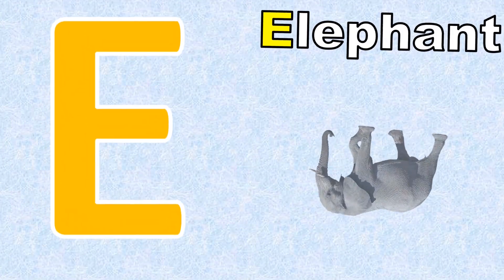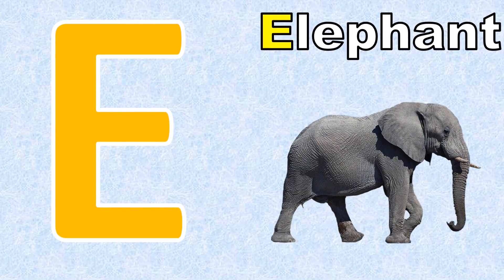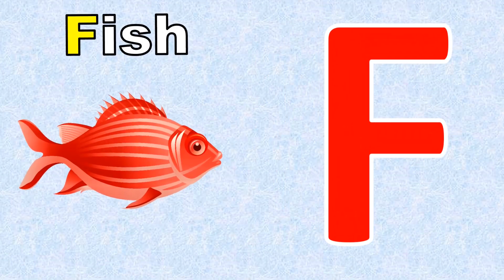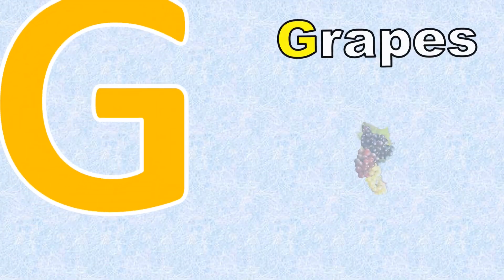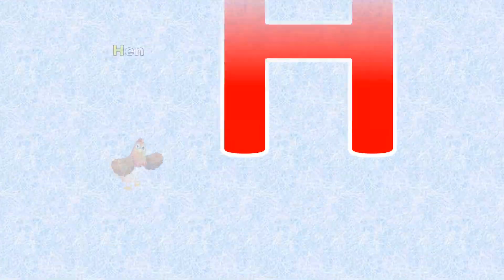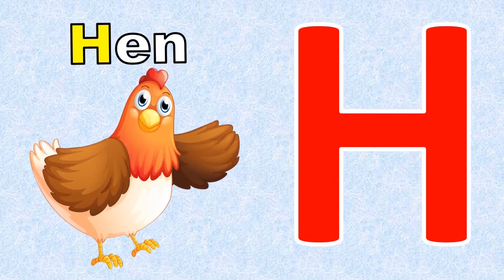E for Elephant. F for Fish. G for Grapes. H for Hen.